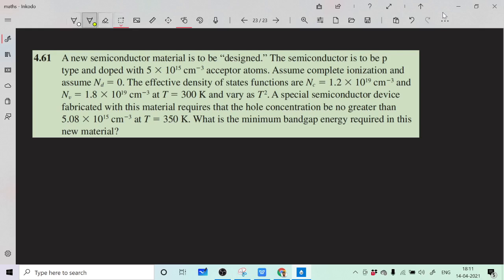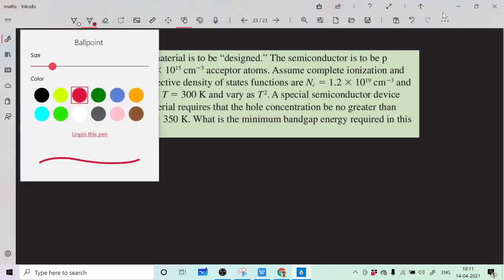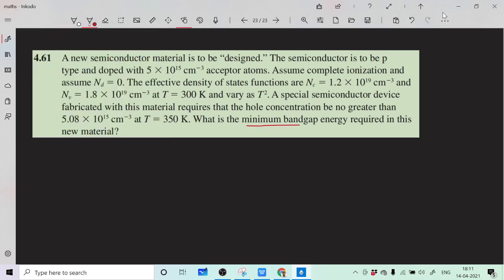So we have to calculate Eg, the minimum bandgap energy. What we are given: P0 is the equilibrium hole concentration, we have Nc and Nv, Nd = 0, and Na = 5×10^15 since it's doped with acceptor atoms.